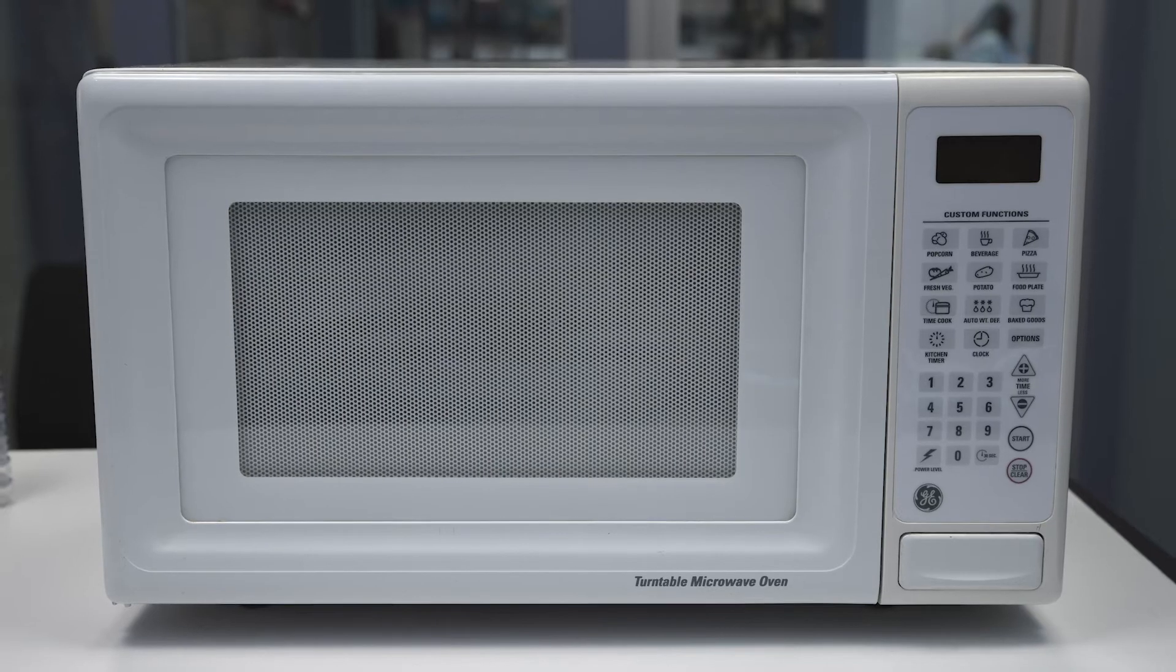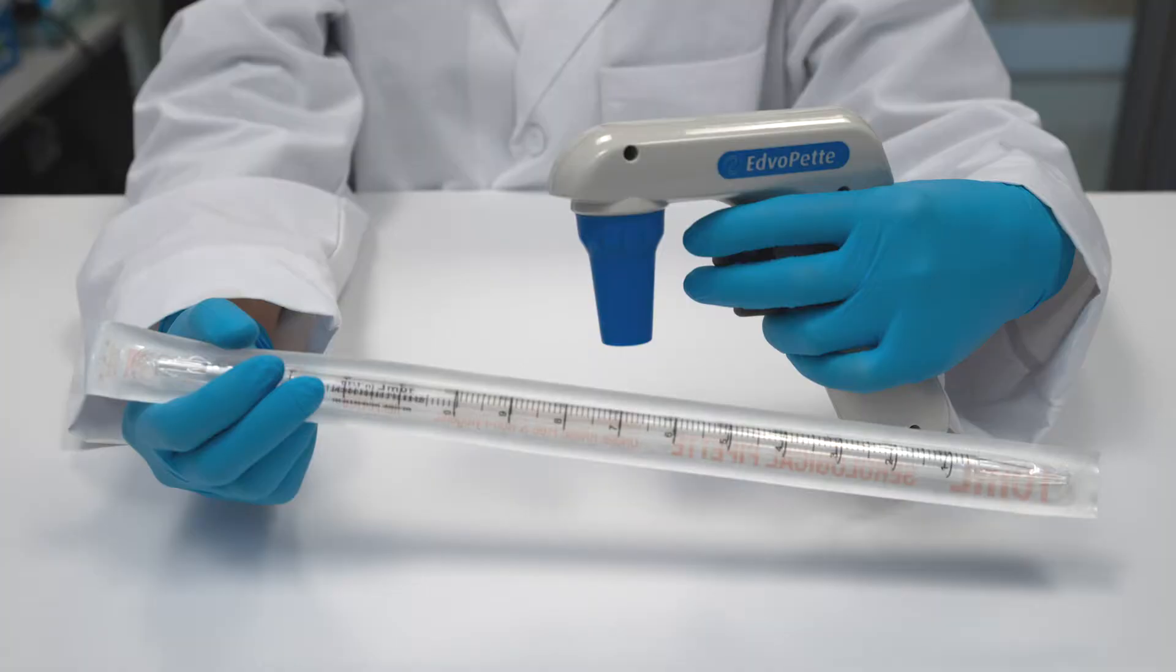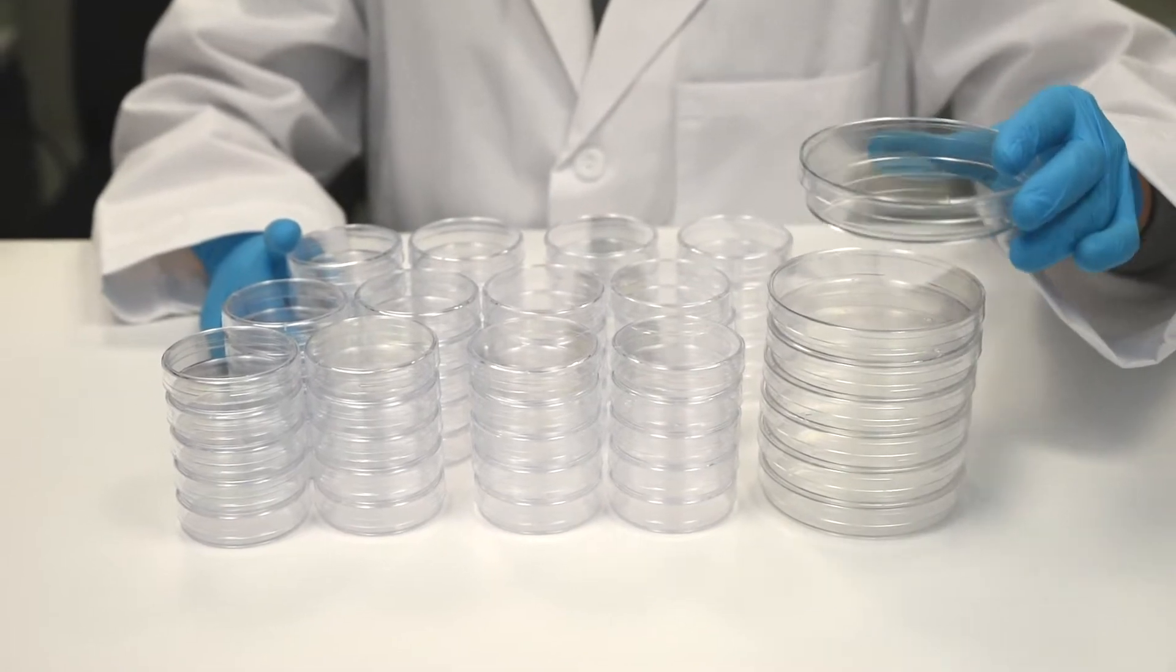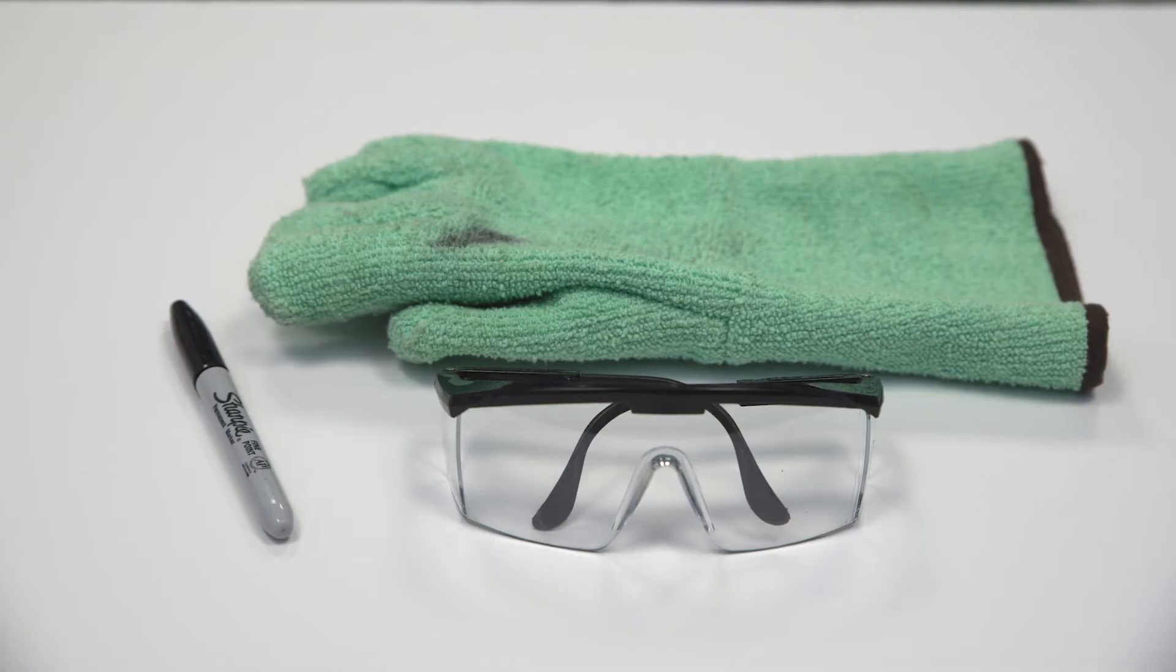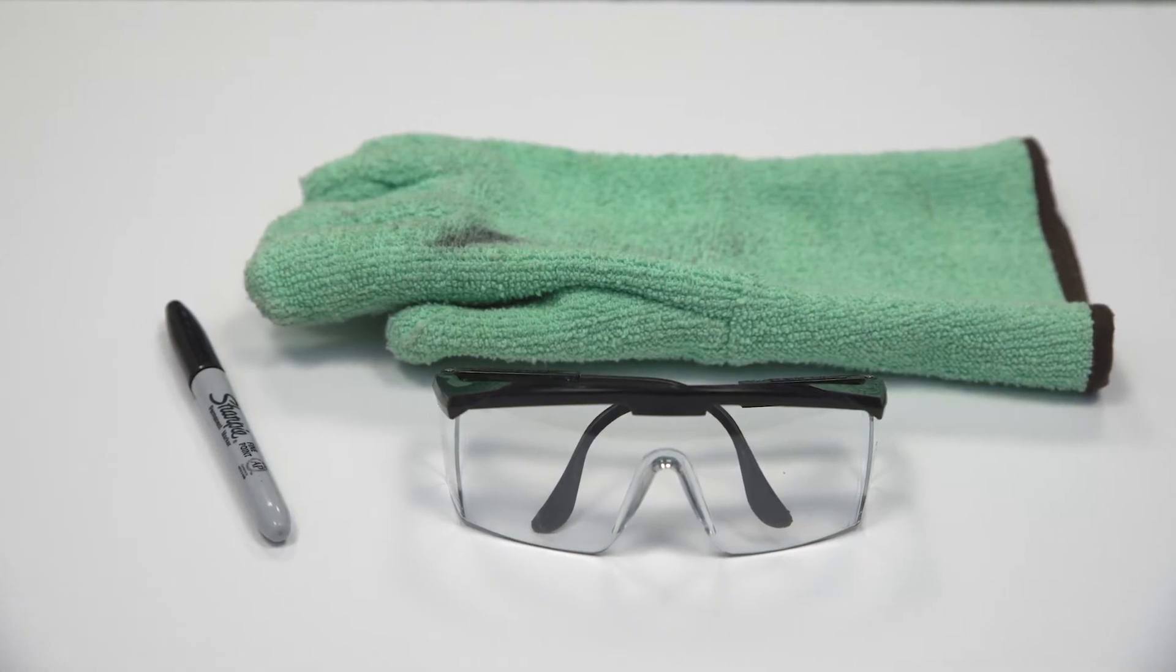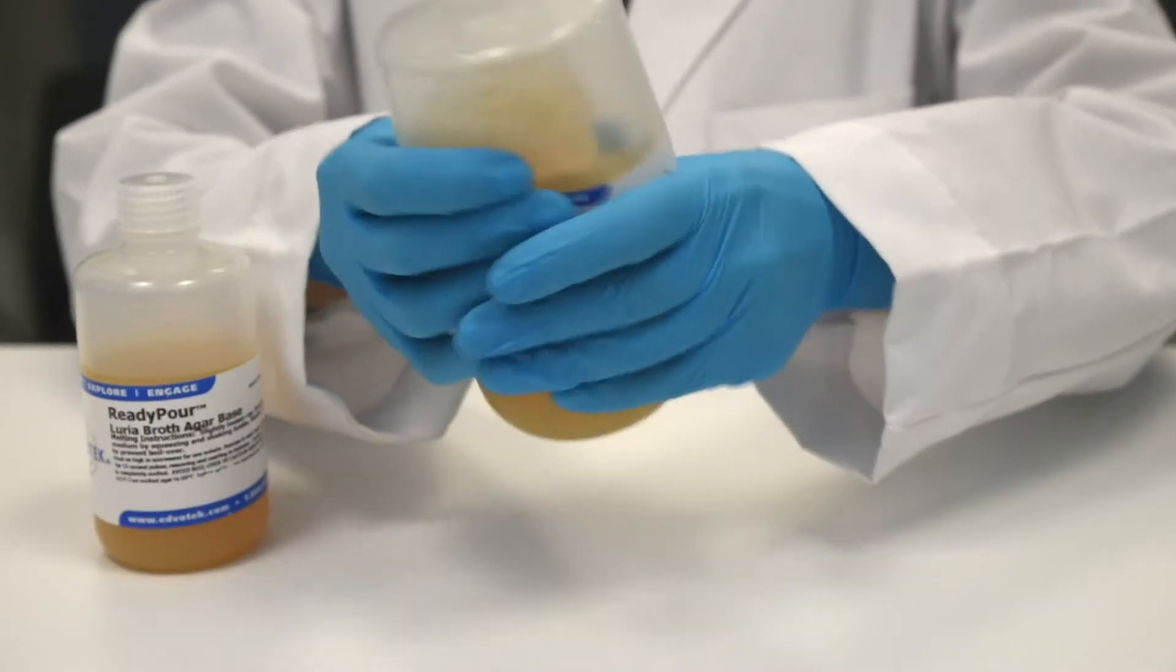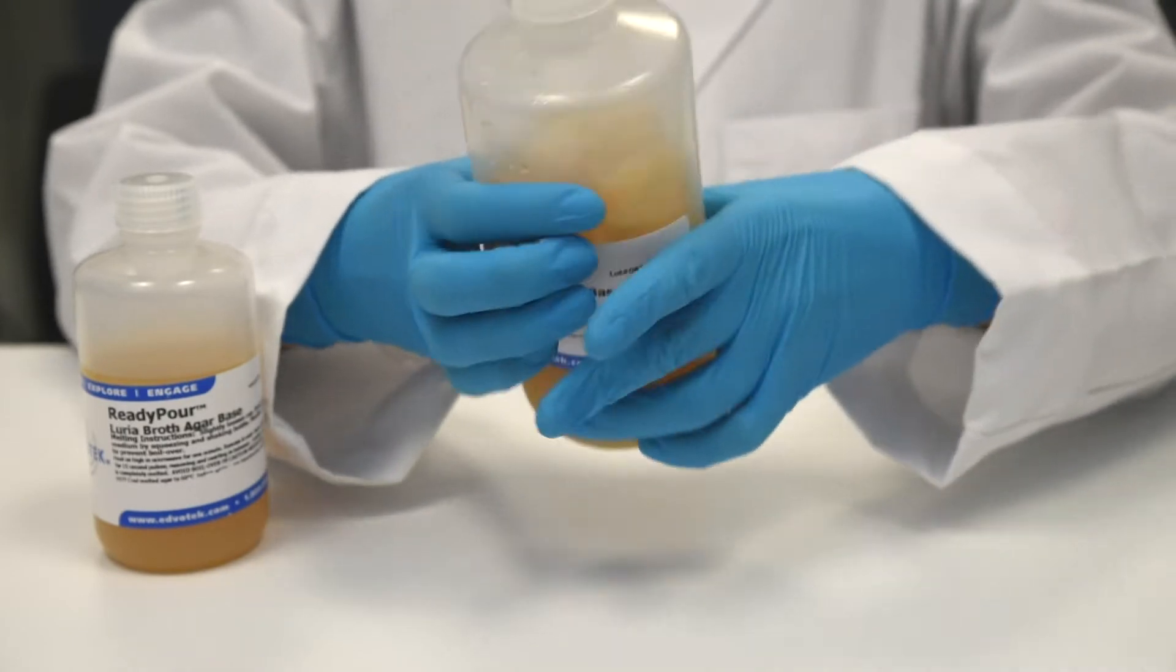You'll also need a microwave oven, a pipette pump and sterile 10 ml pipettes, 7 large and 60 small petri plates, hot gloves, goggles, and a permanent marker. Step 1: Break the solid agar into small chunks by vigorously squeezing and shaking both the large and small ready pour LB agar bottles.